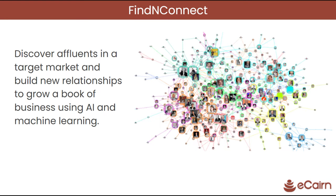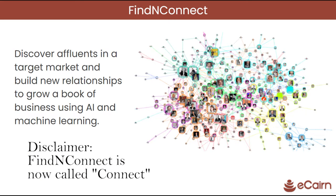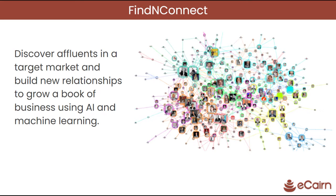If you're not aware of eCairn, eCairn is a tech company in California. The company launched an application called Find and Connect that discovers affluence in a target market to build new relationships and grow a book of business using AI and machine learning. Even though the application is mostly used by financial advisors, it's also available for any kind of industries and tribes that you're focusing on.